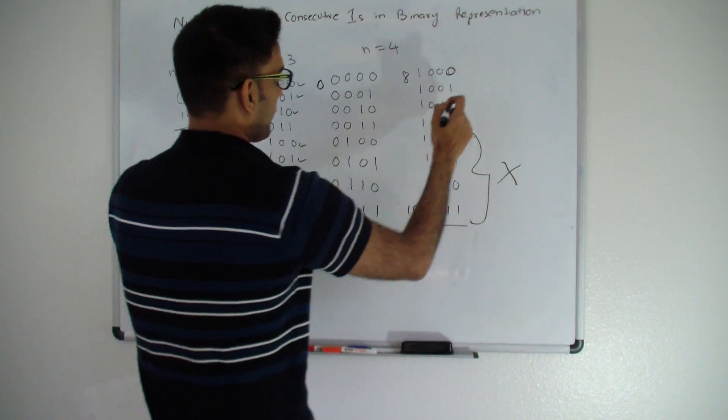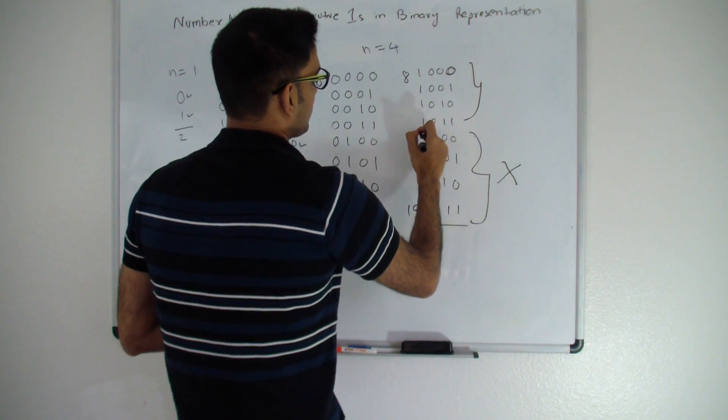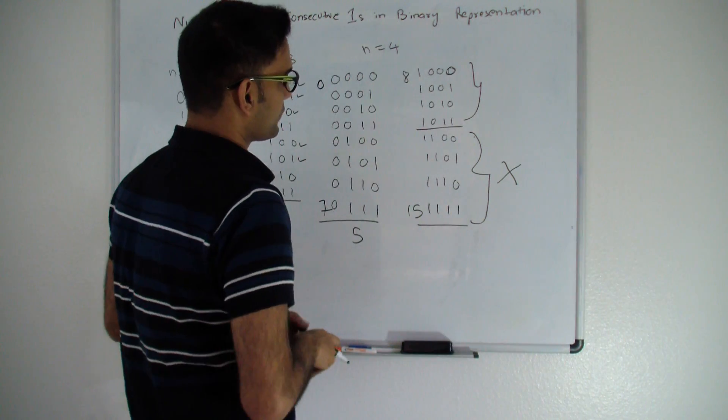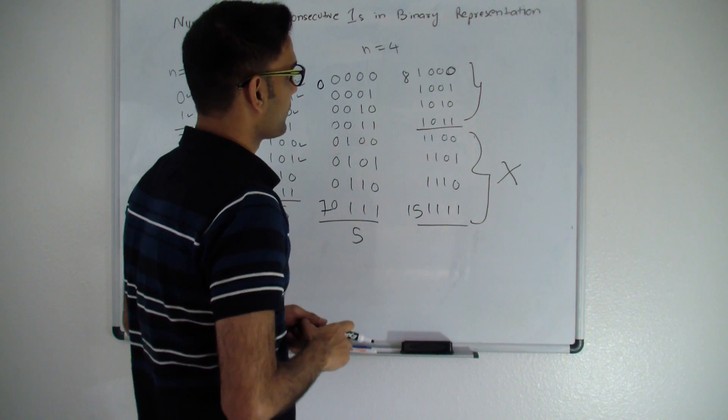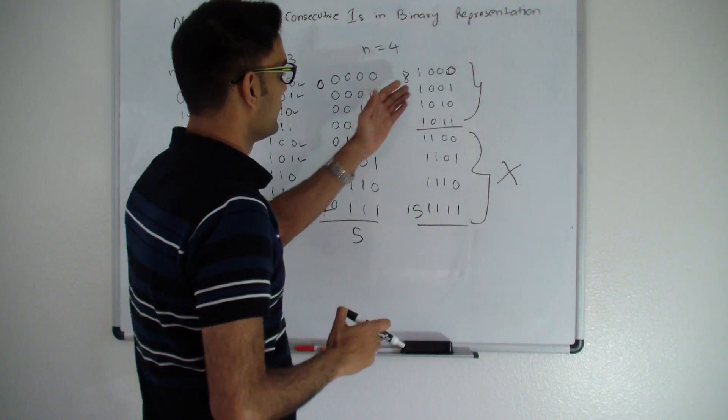We'll not need them. Whatever the rest of the 4 numbers, these guys do contribute. These guys do have numbers who do not have consecutive 1's. So how do you find them?